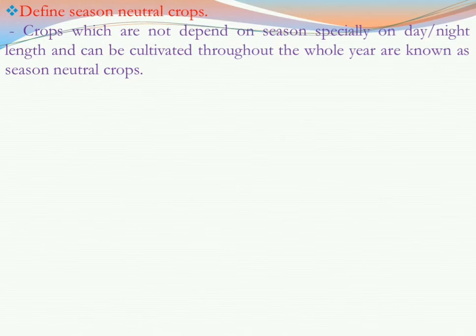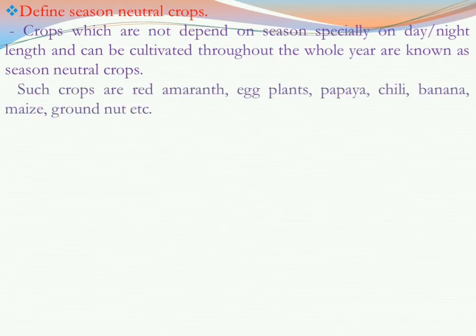Crops that are basically available throughout the year in our country are known as season neutral crops. Examples include red amaranth, eggplant, papaya, chili, banana, maize, and groundnut.